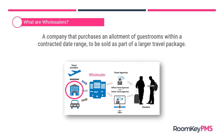In this diagram, the hotel is on the travel provider side, but wholesalers also work with other travel providers like airlines and car rental agencies. That wholesaler in the middle does the packaging, and then there's one more step before it actually gets to travelers.